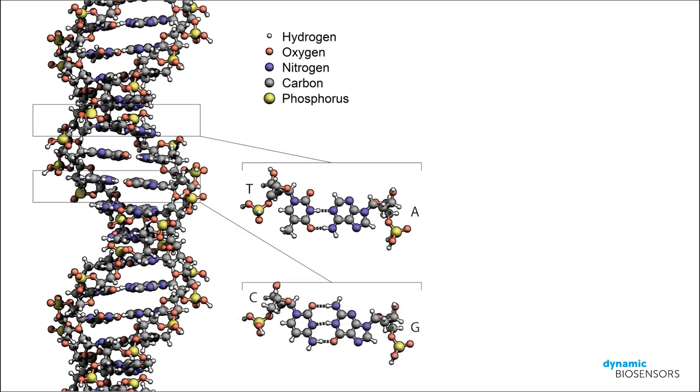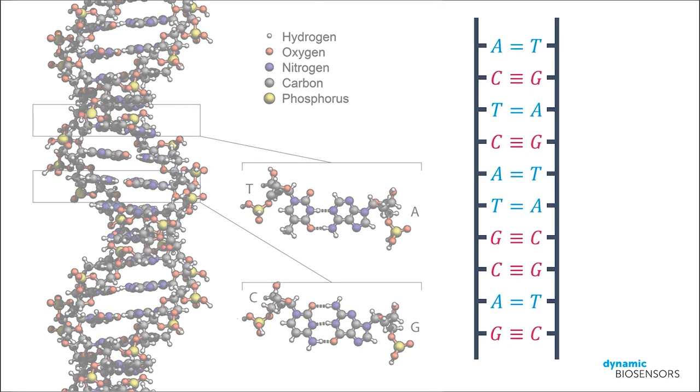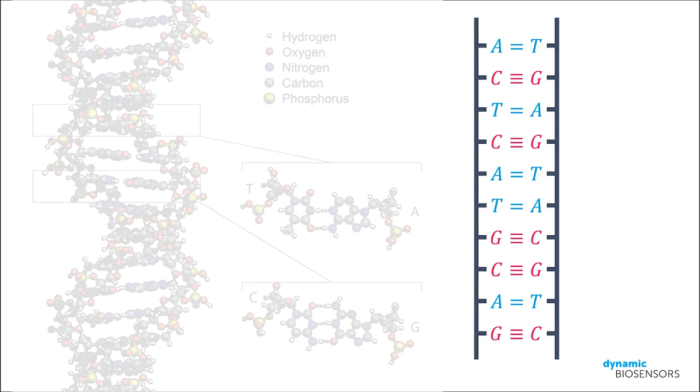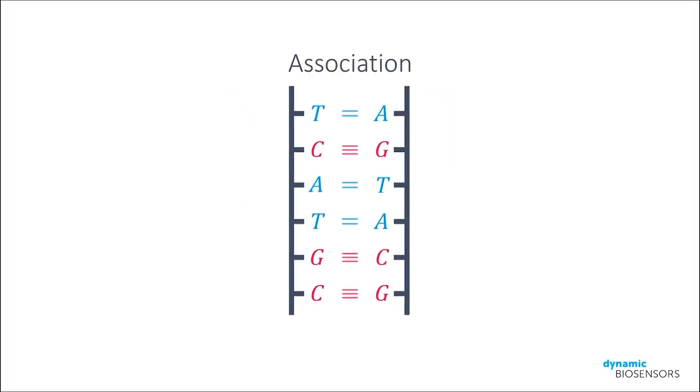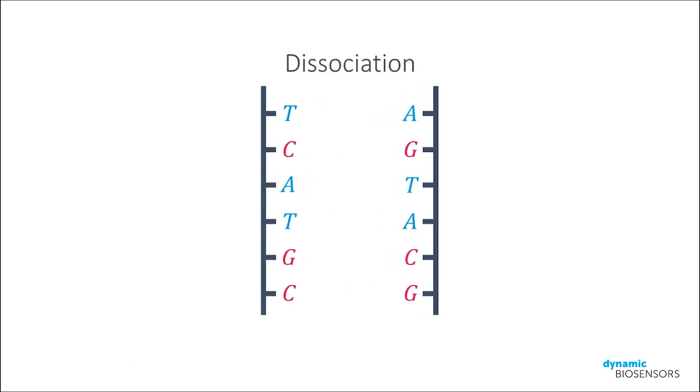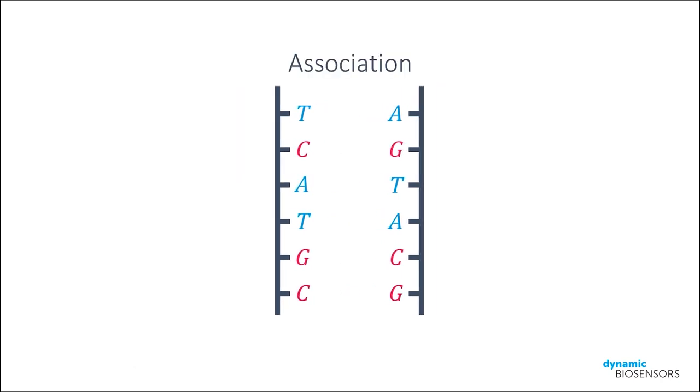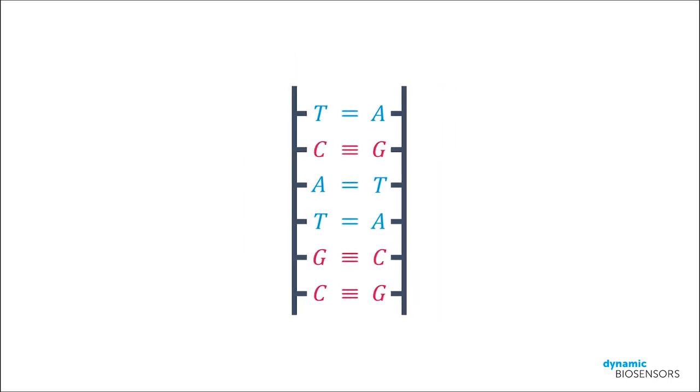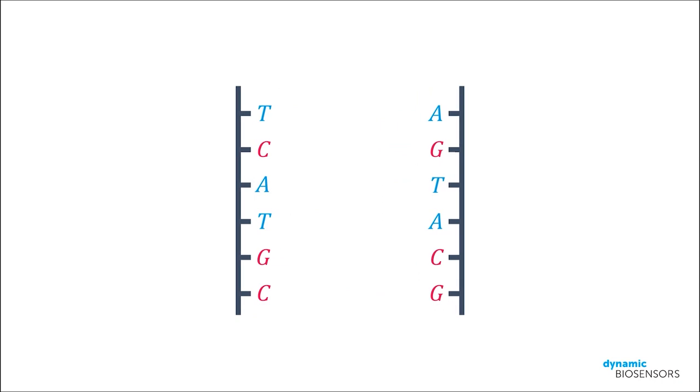For our purposes, however, we can think of DNA as a ladder with two elementary types of binding partners, namely G-C and A-T base pairs. These base pairs hold the two strands together through hydrogen bonds. Because the bonds formed between the strands are non-covalent, the formation of double-stranded DNA is a reversible process. Two single strands with complementary bases can both associate to form a double strand and also dissociate again.